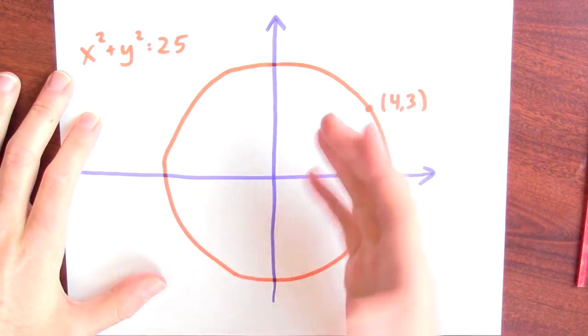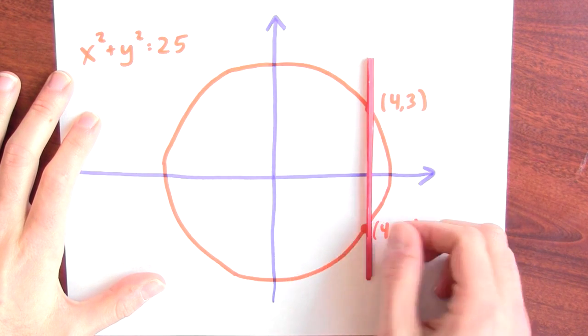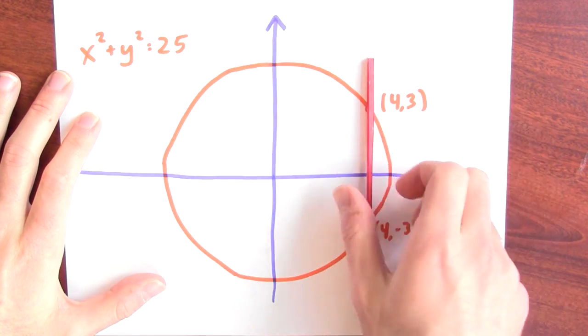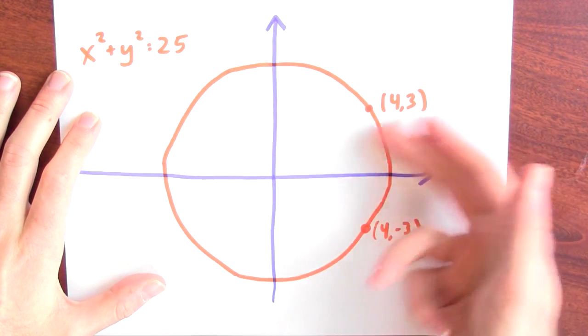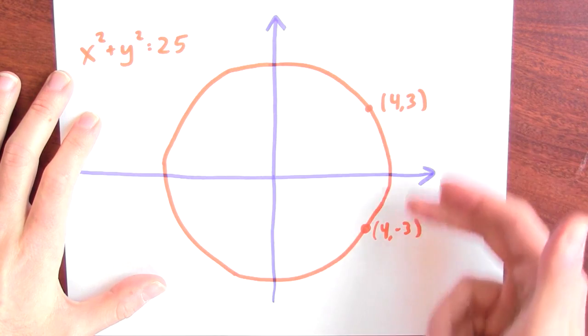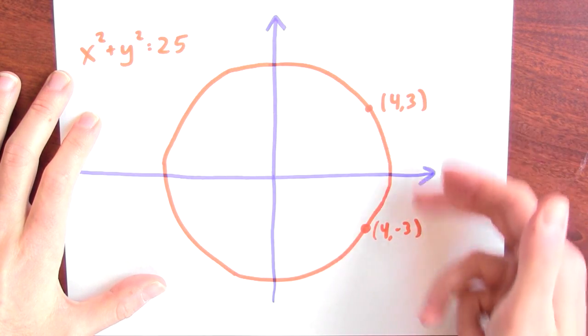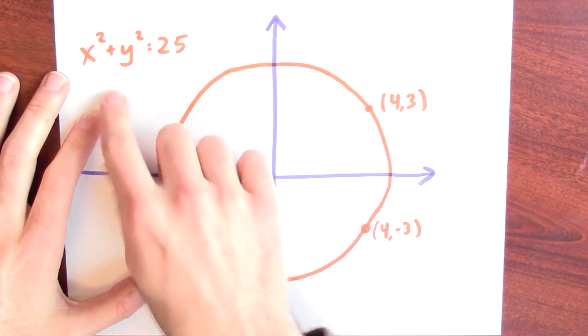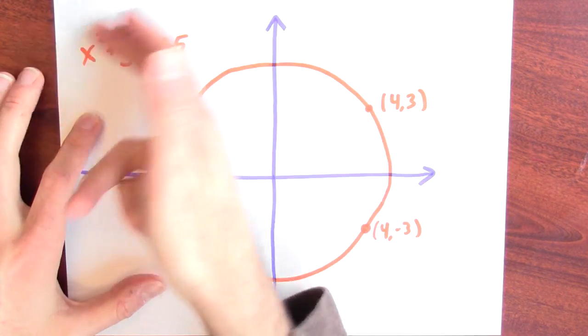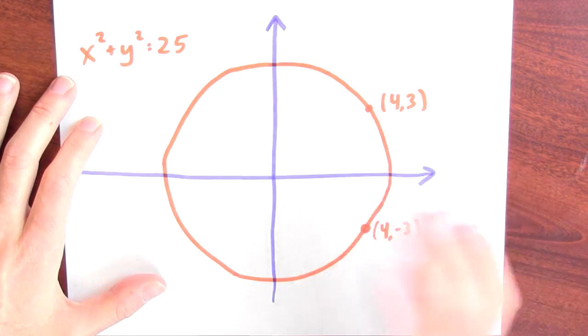But that's not the graph of a function. This graph fails the vertical line test. For a given input value, say 4 in this case, there's multiple y values which satisfy this equation. So I can't simply solve this equation for y.